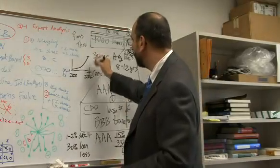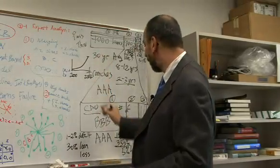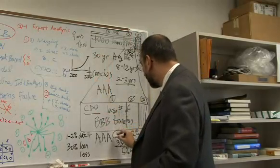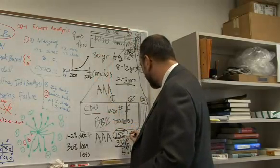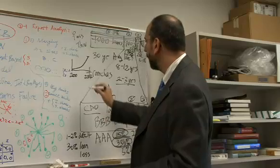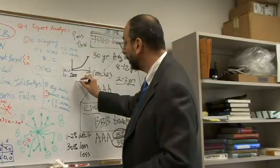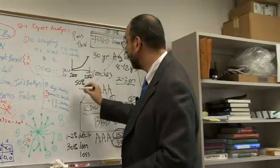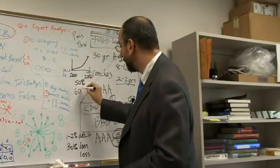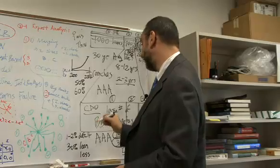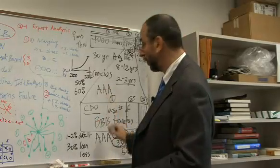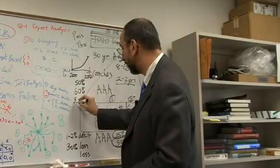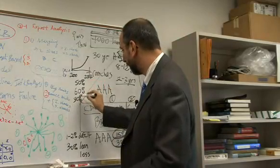Then what happened in 2007 is people started to look at default rates, and of course what they were observing is not the expected default rates of 15% and losses of 33%, but they were looking at default rates of maybe 50%, and they were looking at losses of maybe 60%. That means the expected loss is not 5% anymore. Now the expected loss is 30%. Right?